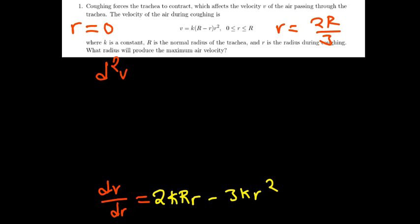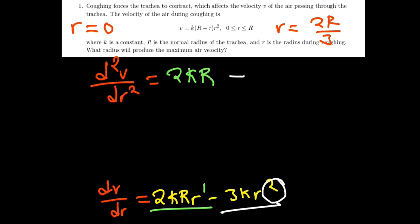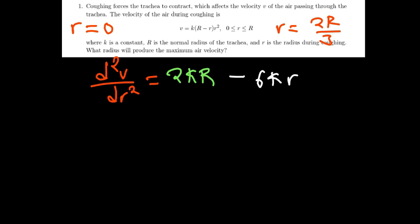So d squared v over dr squared is going to be equal to—let's analyze our first derivative. Multiply by 2, it's going to be 2kR to the power of 0, so it will just be 2kR. Minus 2 times 3 is going to be 6kr to the power of 1. The other one has disappeared because it was r to the power of 0. So we have our second derivative.